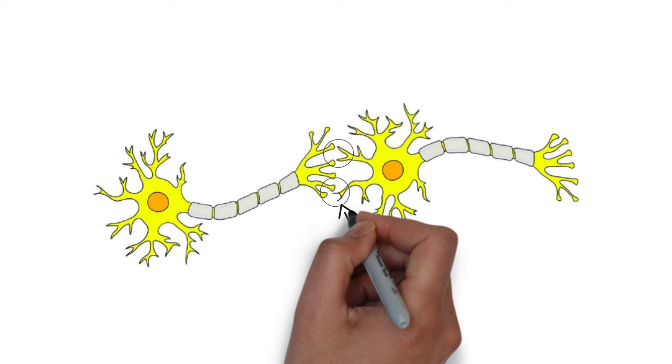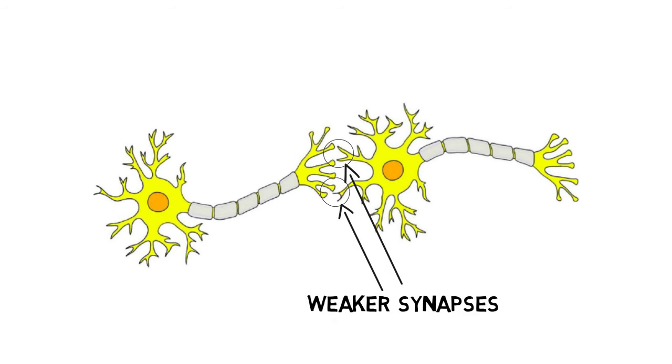LTD may also result in other changes that decrease the strength of synapses, like a decrease in the amount of glutamate released from the presynaptic neuron, and it also can involve other receptors like metabotropic glutamate receptors or other neurotransmitter receptors altogether.